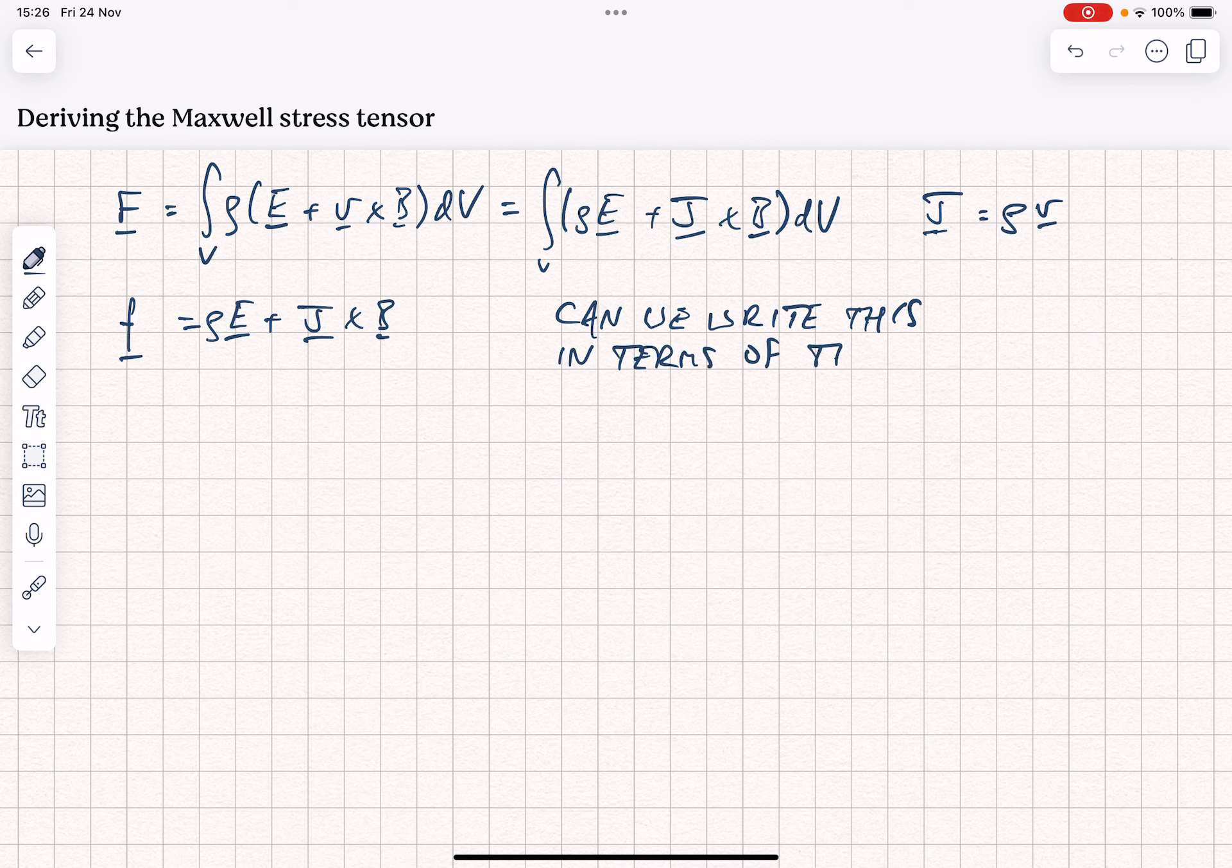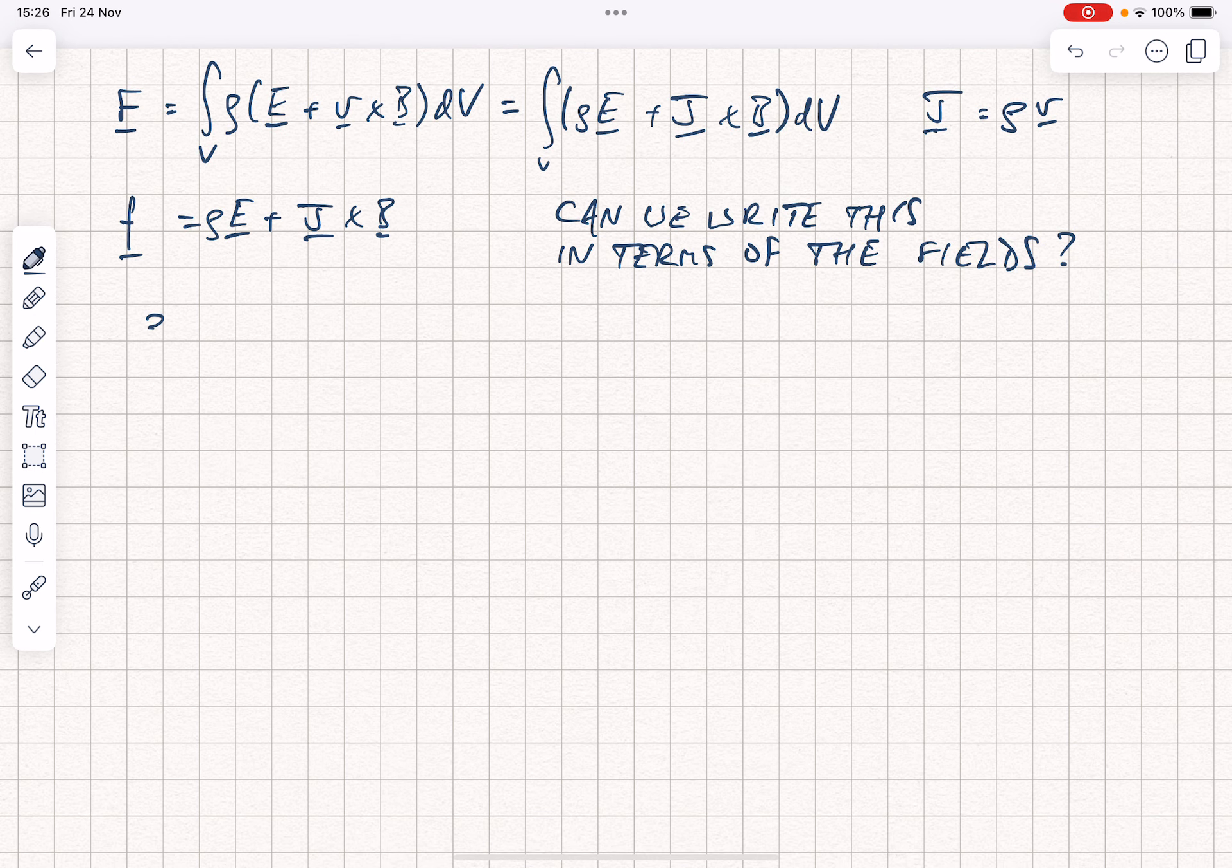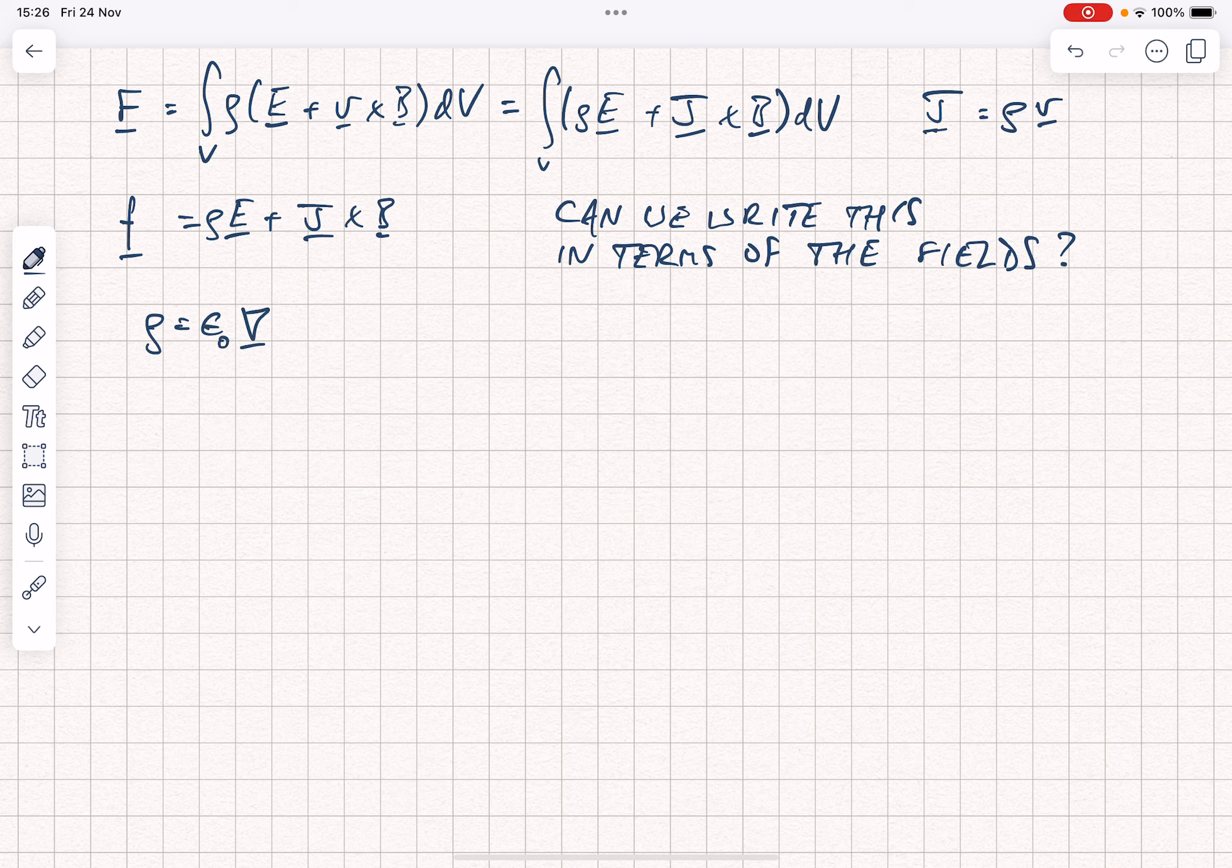So let's start in on this. The first thing we're going to do is we're going to replace rho. So rho using Gauss's law is just epsilon naught div E. And we're also going to replace J, which we're going to write as 1 over mu naught curl B minus epsilon naught dE by dt. That's just the Ampere Maxwell equation rearranged.